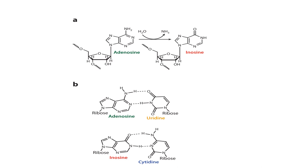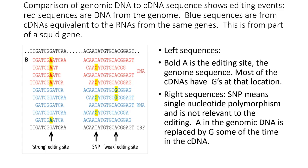Inosine base pairs with cytosine, behaving as a G — it's not quite a G, but close enough to be read as one by biological molecules. The first evidence of editing was discovered by comparing genomic DNA sequences with cDNA sequences from reverse-transcribed mRNAs. In one example, a highlighted A in the genomic DNA appears mostly as G in the cDNA, with occasional A remaining — showing that editing is strong but not absolute. Another site shows proportionally less editing, with A appearing some of the time as G in cDNA, representing a weaker editing site.